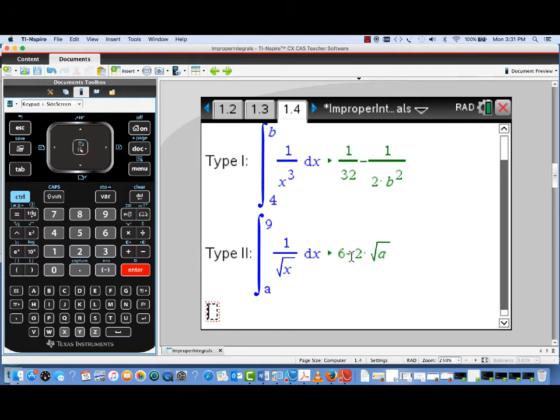And again, we can see exactly what's going on. We have 6 minus 2 square root of a, but if we let a approach 0 from the right, that term will just approach 0, leaving us with a convergent limit of 6.